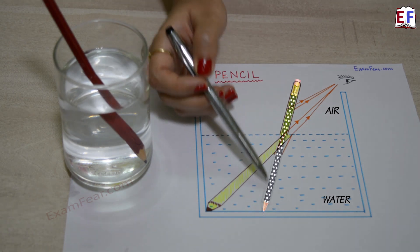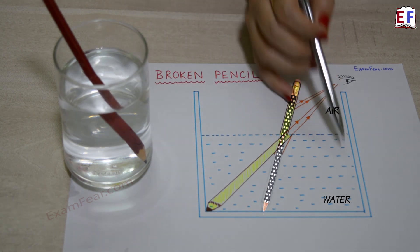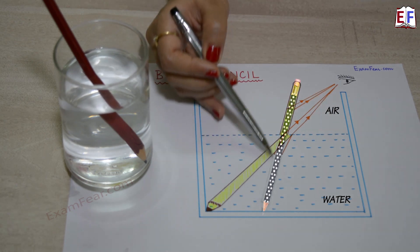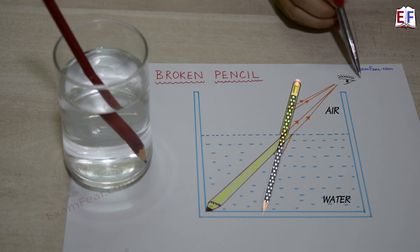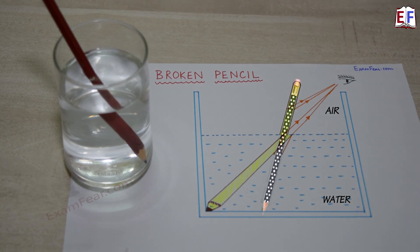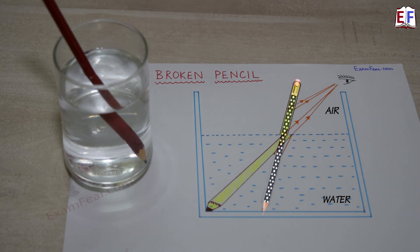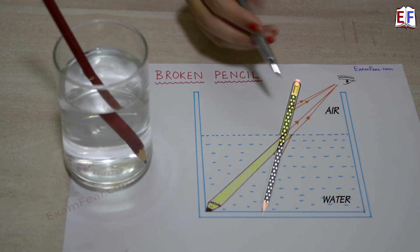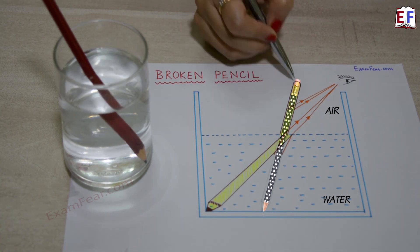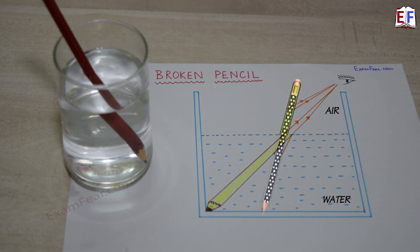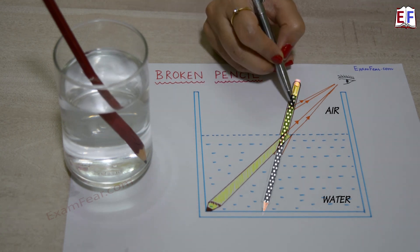We have filled it with water till here. This is your actual pencil — a straight pencil. This is where we are looking from, so this is our eye. As I always say, whatever we see is whatever reaches our eyes. Let us first see what we see for the upper part of the pencil, which is not in water — so this is air.